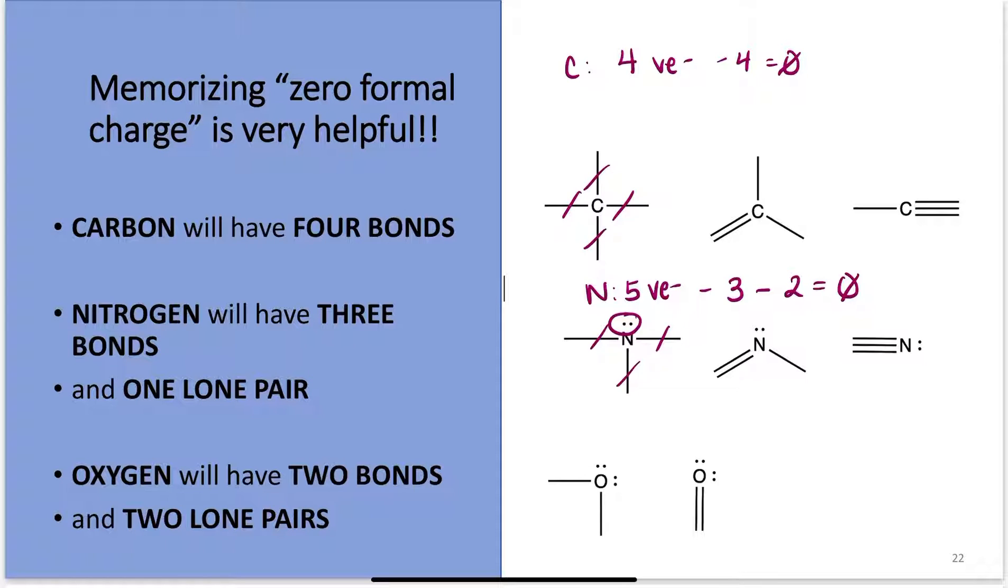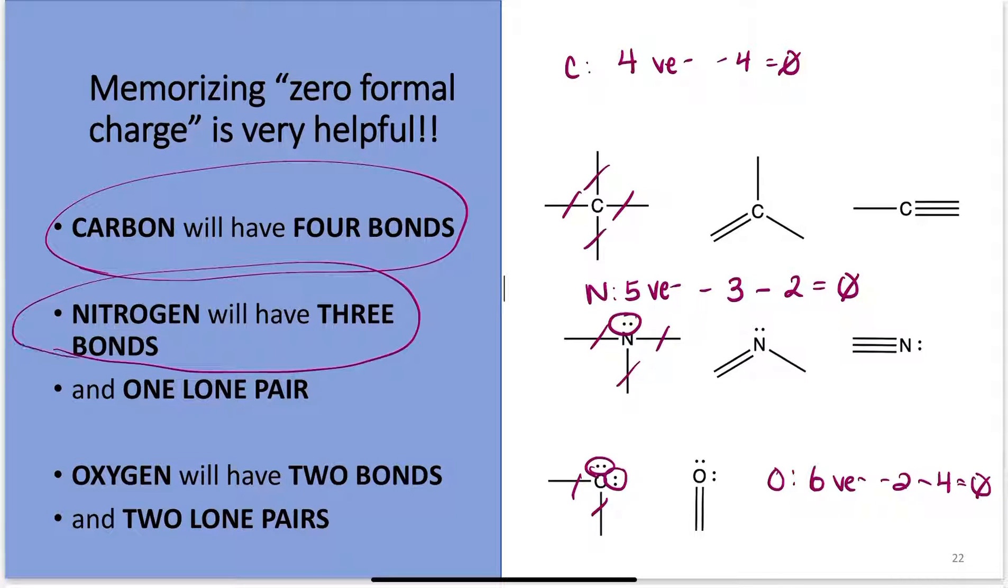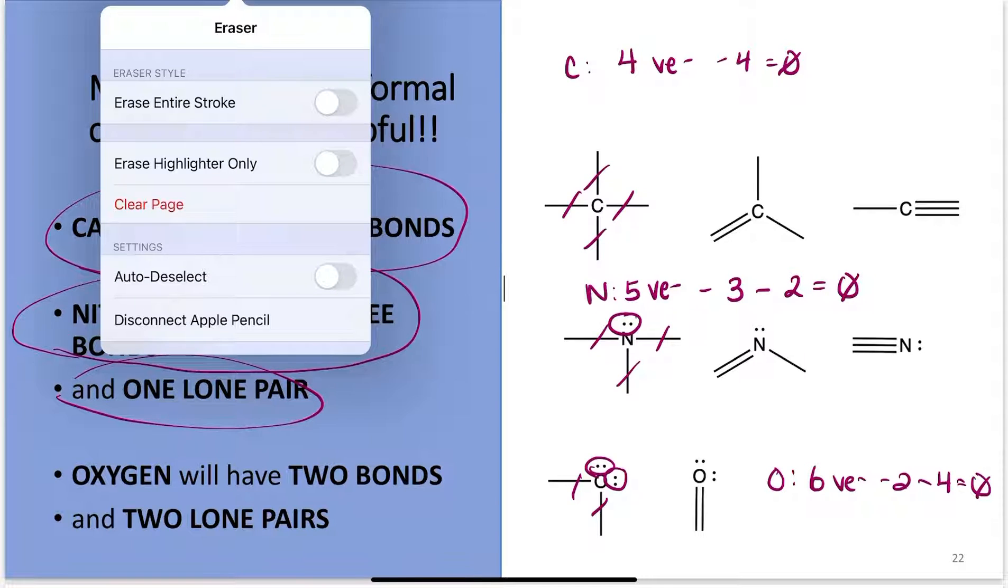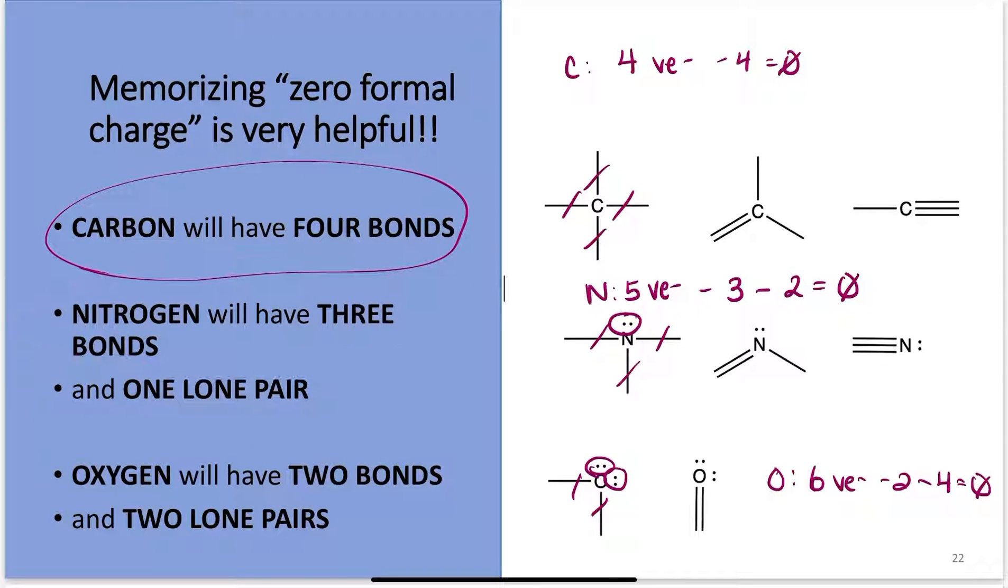Oxygen: if it has 2 bonds and 2 lone pairs, this is what oxygen prefers. Oxygen wants either 2 bonds, doesn't care if they're double bonds or single bonds, it wants 2 bonds and 2 lone pairs. 6 valence electrons, 1, 2, 3, 4. So, if you see one of these cases, carbon with 4 bonds, nitrogen with 3 bonds and a lone pair, or oxygen 2 bonds and 2 lone pairs, they have 0 formal charge. And if you can just memorize that, it will actually make your life easier. Because then when you see it, you don't have to calculate it. You can just look at it really fast and be like, yep, that's 0, move on to the next one.